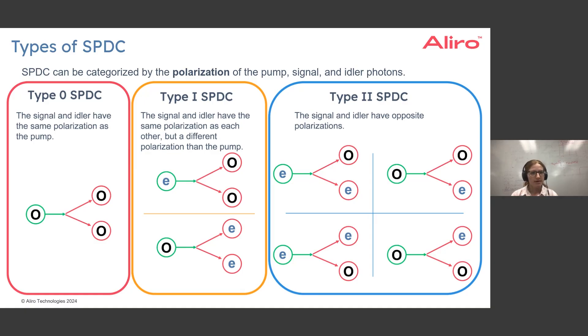Another way that we can categorize spontaneous parametric down conversion is by the polarization of the pump, signal, and idler photons.